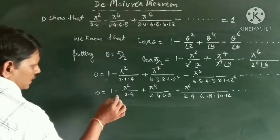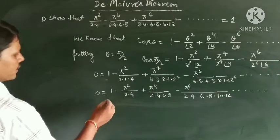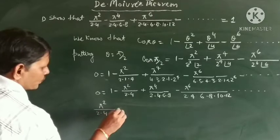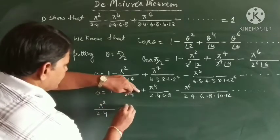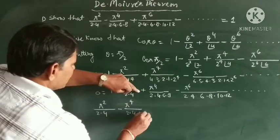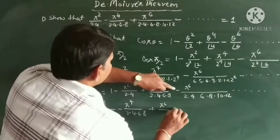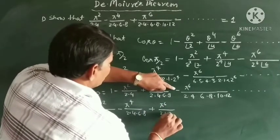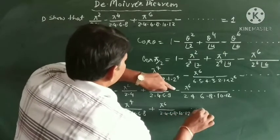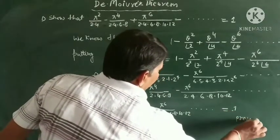Now here, pi squared upon 2 into 4, minus pi to the power 4 upon 2 into 4 into 6 into 8, plus pi to the power 6 upon 2 into 4 into 6 into 8 into 10 into 12, and so on, that is equal to 1. Proved.